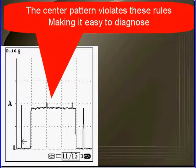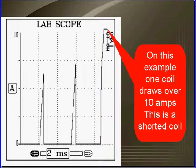The one on the left, the one on the right, the one in the center is a bad one. On this example, one coil draws over 10 amps. This is a shorted coil.